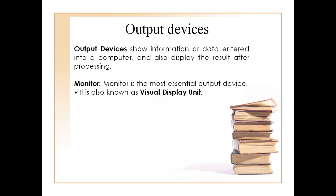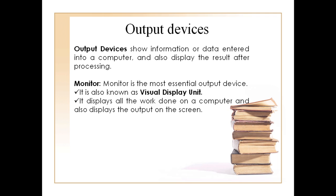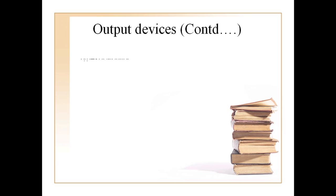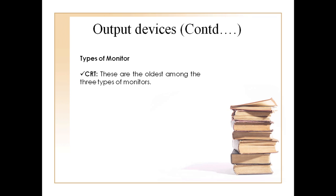A monitor looks like a television. It is also known as VDU, which stands for Visual Display Unit. It displays the output produced by the computer after processing the input. It can show both text and pictures. The output displayed by the monitor is called soft copy.